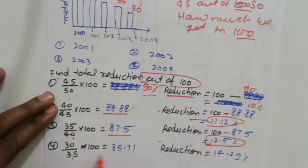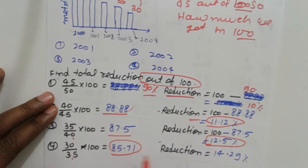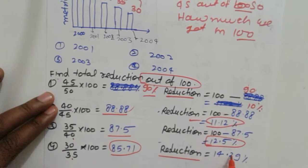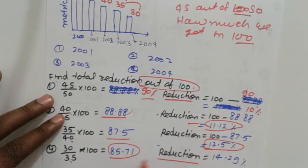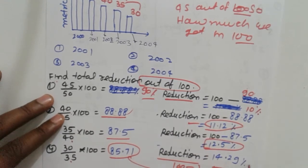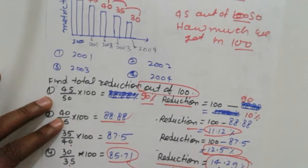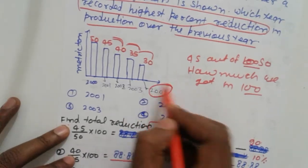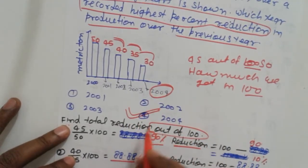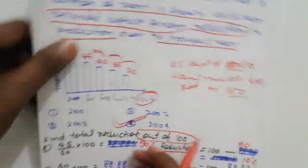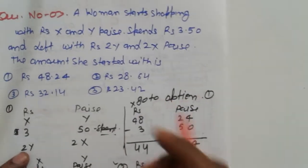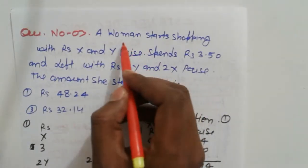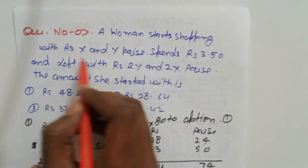The next reduction is 14.29 percent, which is the maximum. The year 2004 corresponds to the maximum percentage reduction, so option number 4 is correct.